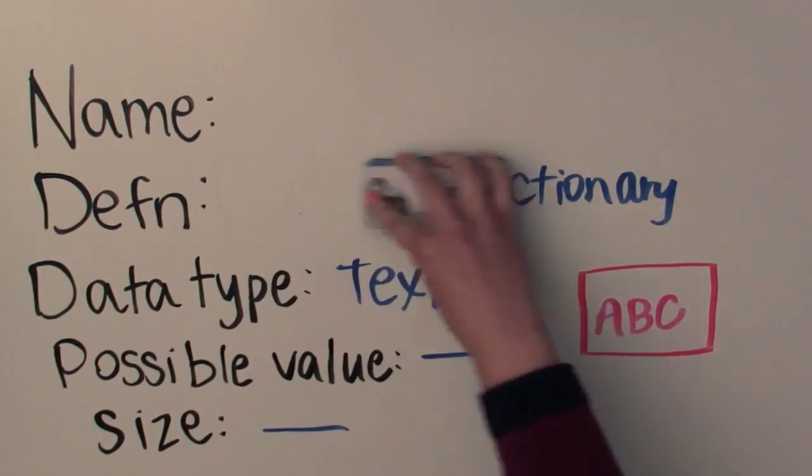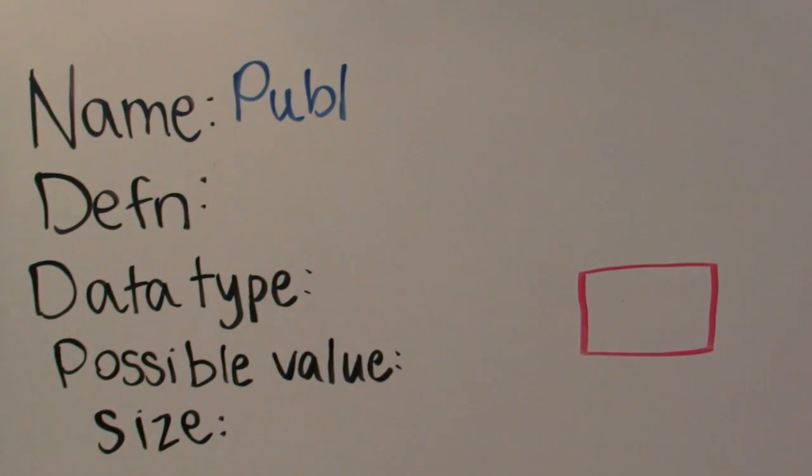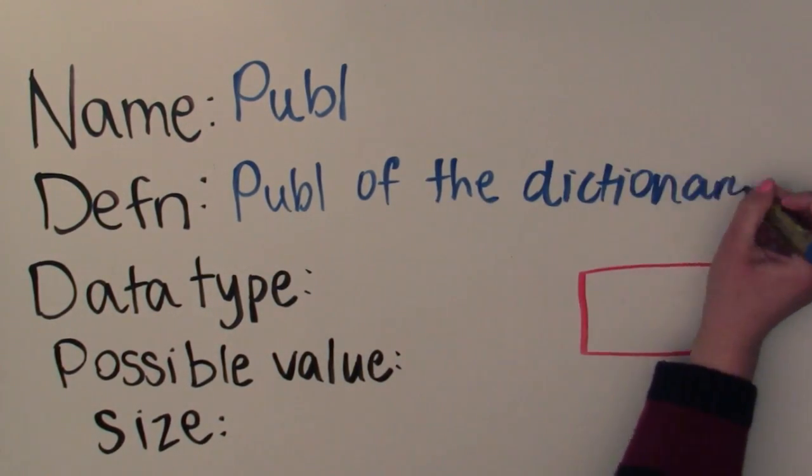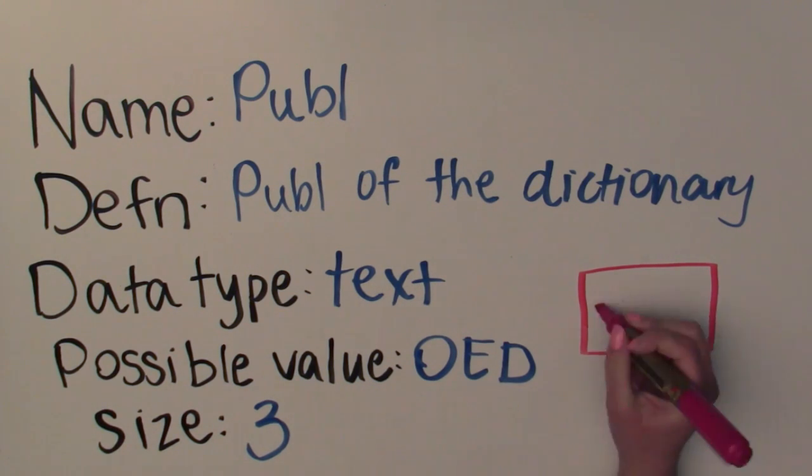Now I'll make an entry for the publisher. The publisher is repeated and that takes time to write down because a lot of publishers have long names, like the Oxford English Dictionary. Because of this, I'm going to abbreviate the publisher's name. This makes the data faster to enter and takes up less space.